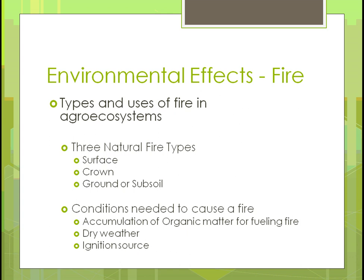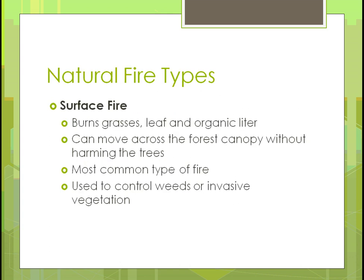You also need some way in which that fire starts. Surface fires basically burn the grasses, any leaves, and any organic litter. If you had a cornfield with residue on top, it would burn that off and that'd be it. It pretty much moves across the canopy without harming any trees because it's so fast moving. It's the most common type of fire, and sometimes it's set by humans to control weeds or invasive vegetation — a lot of prairie burns are done to control unwanted plants. It's the simplest way to get rid of them.